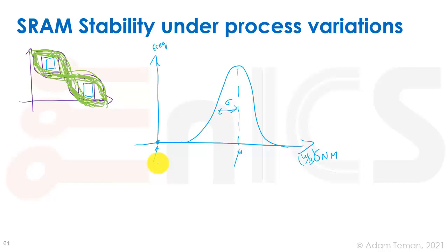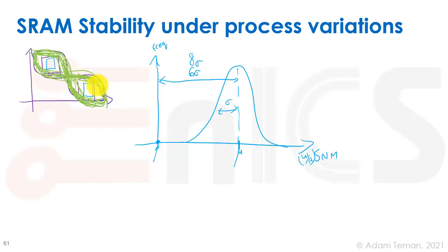The probability of failure is nonzero, so we require at least 6-sigma distance between our mean and zero — under read margin, write margin, and static noise margin. Some people require even 8-sigma. If we lower the voltage, the margin gets much worse and variation depletes it further: σ grows, μ lowers, making the 6-sigma or 8-sigma requirement harder to achieve. SRAM becomes very unstable under process variation and voltage scaling, and this can be checked using the static noise margin metric.